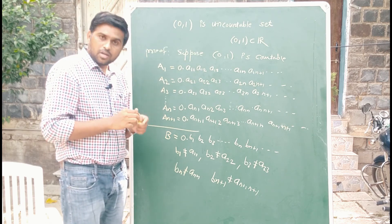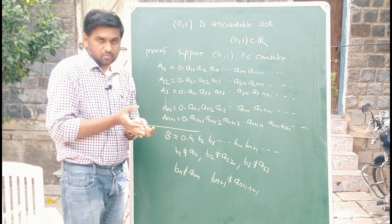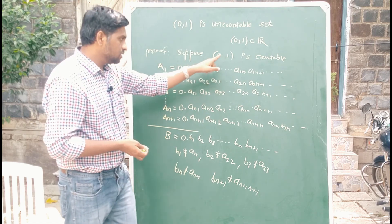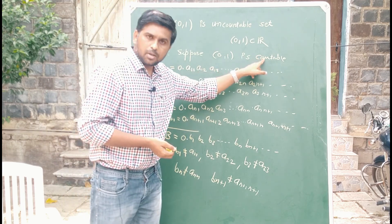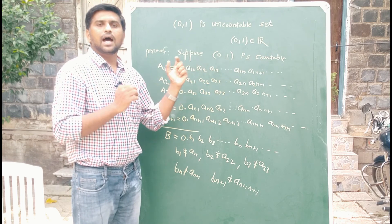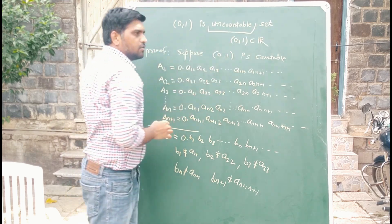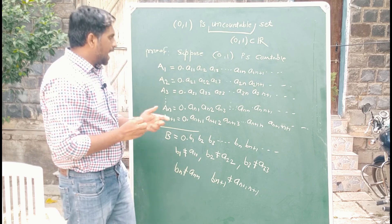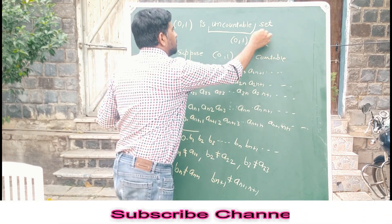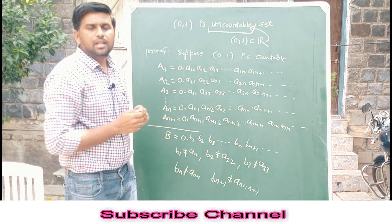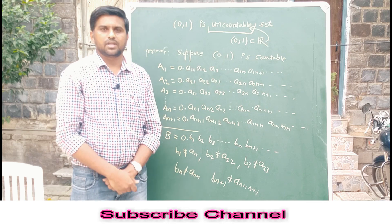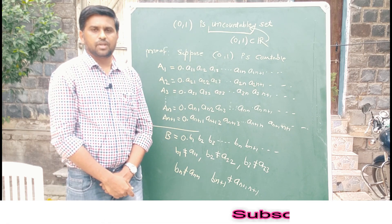In a countable set there is no permission to miss even one element, but we missed one here. That is why our assumption that the open interval (0,1) is countable is wrong, and hence the open interval (0,1) is an uncountable set. Since the open interval (0,1) is a subset of the set of real numbers, the set of real numbers is also uncountable. This completes the proof. Thank you for watching.